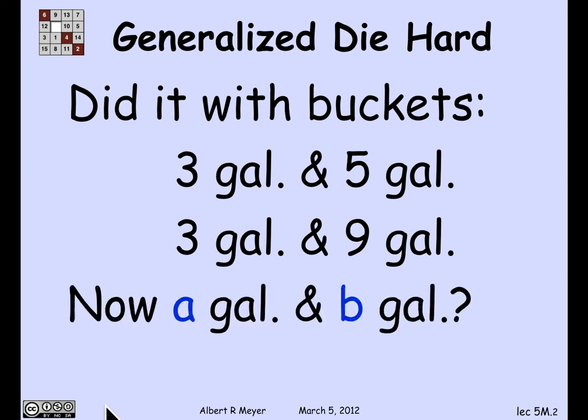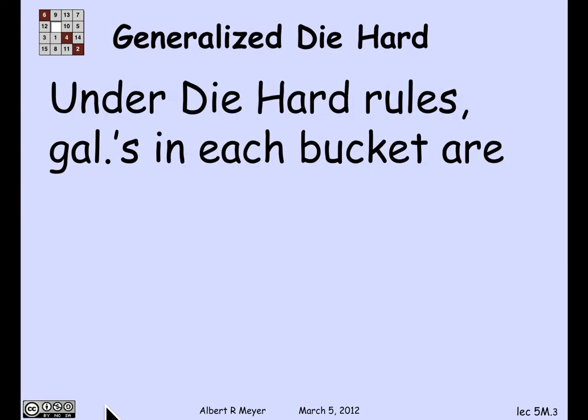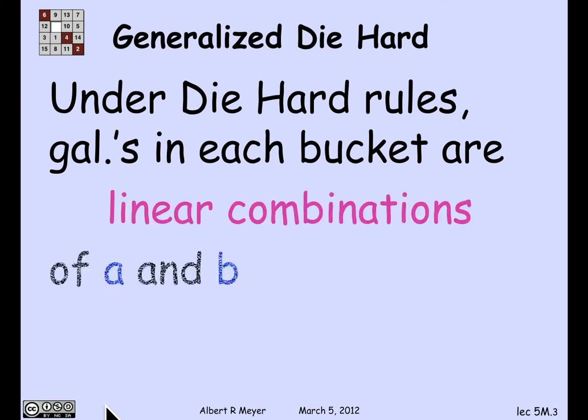Suppose I have jugs of A gallons and B gallons, where A and B are positive integers. When we looked at the state machine, we figured out that under the Die Hard rules, the number of gallons in each bucket at any stage is a linear combination of the bucket sizes. So at any point, after any sequence of Die Hard moves, in each bucket there will be a linear combination of A and B.